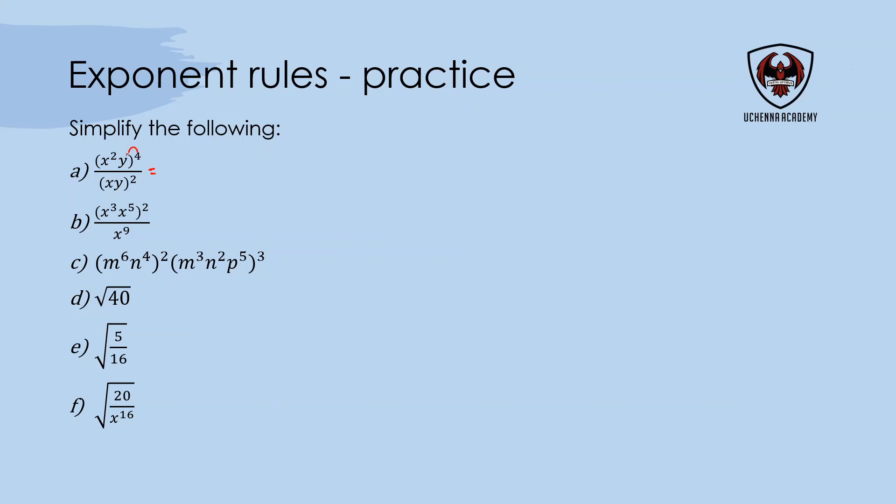In the first one, we distribute the 4 into both bases because they're being multiplied. The numerator becomes x to the exponent 2 times 4, which is 8, and y to the exponent 1 times 4, which is 4, over x and y. Then I subtract the exponents because I'm dividing the bases, and that becomes x to the exponent 6 and y to the exponent 2. In the second example, I'll work on the numerator first. The x's are being multiplied, so I add the exponents: x to the exponent 8, 3 plus 5. Then I multiply the exponents—16 in the numerator and 9 in the denominator. I subtract to get x to the exponent 7.